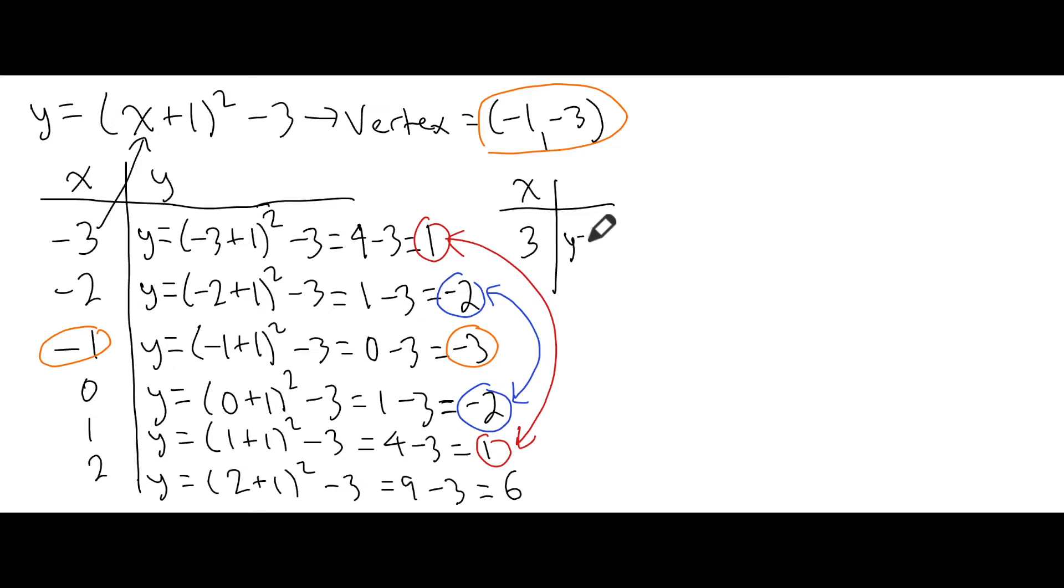Finally, for x equals 3, we sub in 3 into x. So we have (3 + 1)² - 3. We know that 3 + 1 is 4. 4 squared is 16, so we have 16 - 3. And 16 - 3 gives us a total answer of 13.